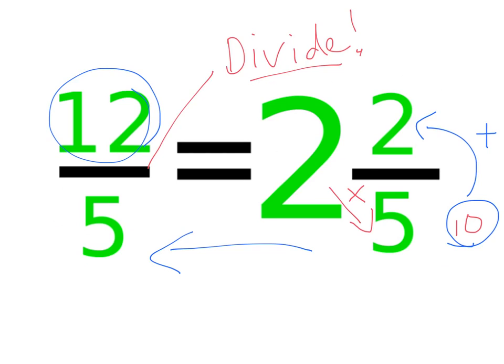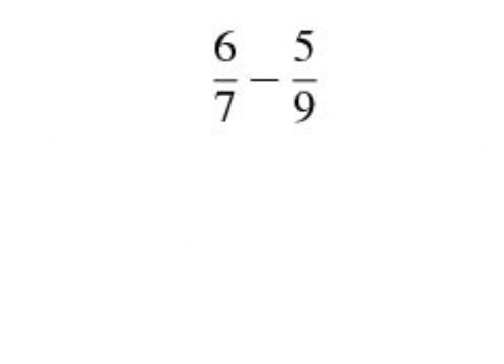We're going to look at addition and subtraction using the smile and the kiss method. The method we use for addition and subtraction only is this method here, and the reason why we use it is because the denominators—that's the numbers in the bottom—have to be the same. We can't subtract sevenths and ninths because they're different, just like we can't subtract x's and y's in algebra. We can't subtract sevenths and ninths in fractions, and we can't add them either.